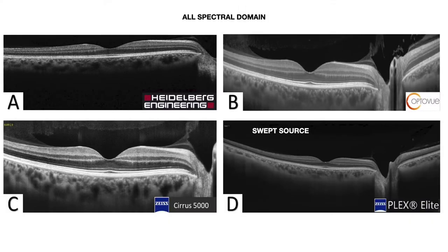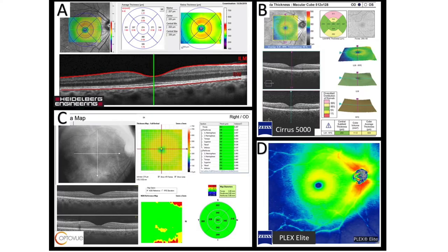Here we see spectral domain OCT of the same patient, same eye, on different machines. Top left is Heidelberg Spectralis, top right is OptoVue Avanti, bottom left is Zeiss Cirrus 5000, and bottom right is the Plex Elite swept-source, which is still mostly in experimental academic centers although approved for certain clinical uses. Different machines change what is called the gamma gain — how it renders high and low reflectivity — so they highlight different things. The Spectralis does not have normative data to compare against, giving a map with values and color coding only.